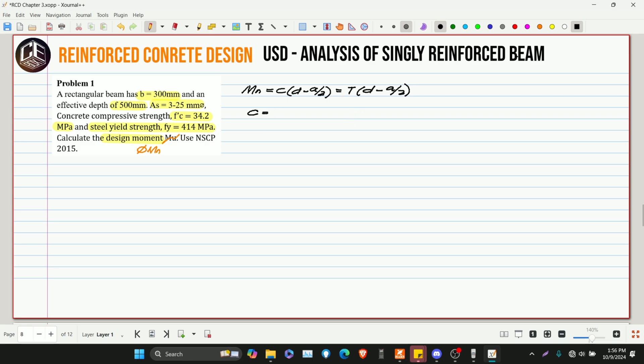Now, ang ating C is equivalent to T. Ang ating C is equivalent to 0.85 F'C multiplied by A multiplied by B. Samantalang naman, ang ating T is equivalent to AS FS. Now, kailangan natin mag-decide kung mag-yield ba or hindi ang bakal. Pero, syempre, hindi natin alam kung ano talaga sa dalawa yung mangyayari. So, ang gagawin natin is mag-assume tayo ng dalawa. Una, kung mag-yield siya. Pangalawa, kapag hindi na siya nag-yield.